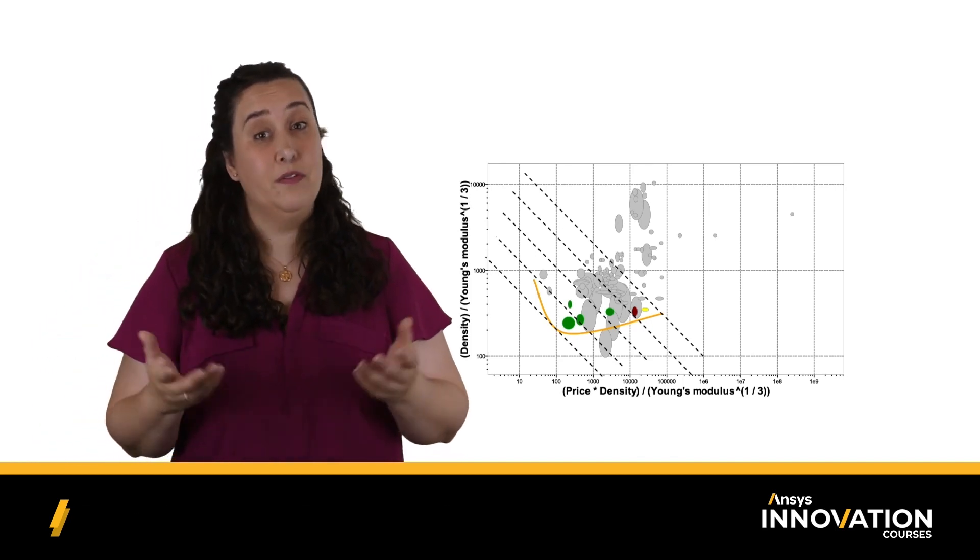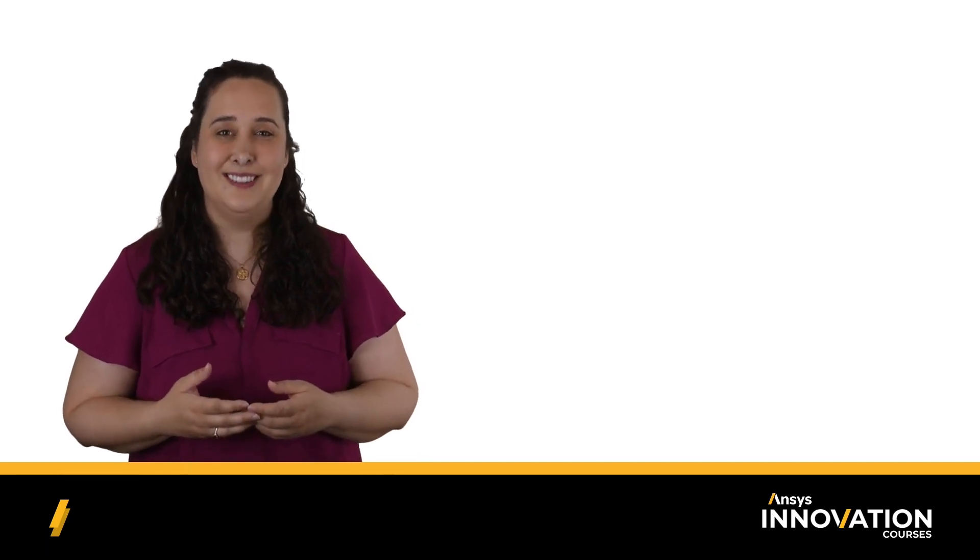With that, we've come to the end of this lesson. We've shown how to set up selection plots to consider two objectives during the ranking step, and discussed different strategies for addressing trade-offs. In the next and final lesson of this course, we'll look at a case example of selecting a material for a car door panel using ANSYS Granta EduPack, where we'll be ranking multiple objectives. See you then!